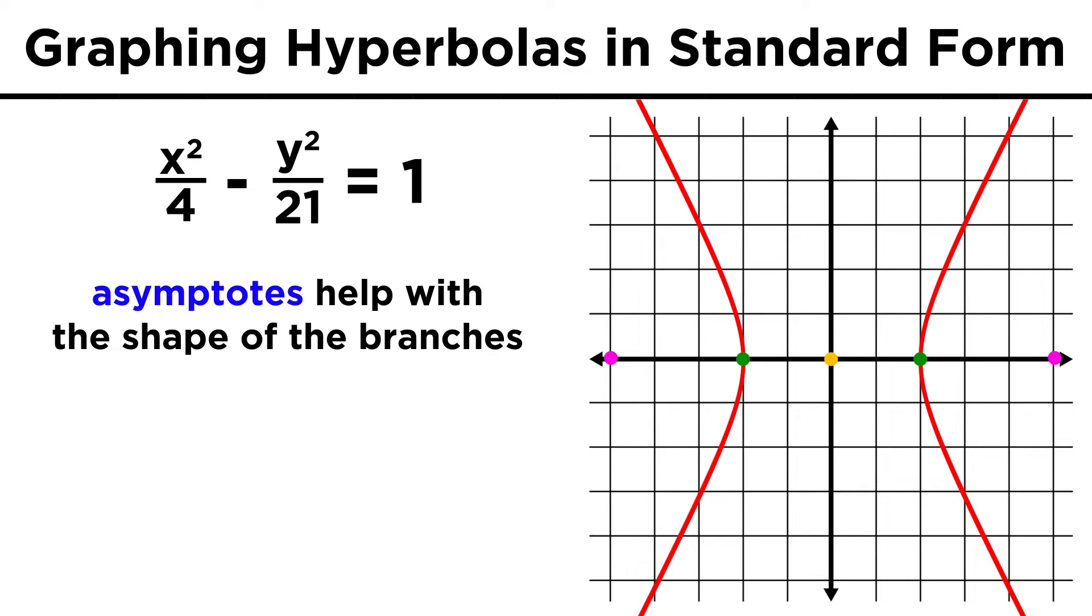If you're having trouble drawing the branches of the hyperbola, one thing that can help is to draw the asymptotes. These are the lines that the branches approach, getting closer and closer but never touching.